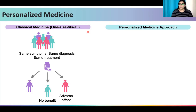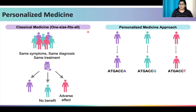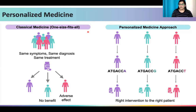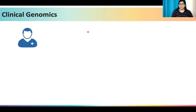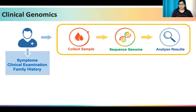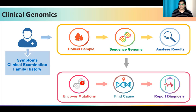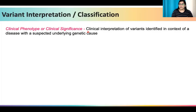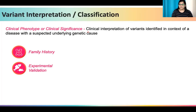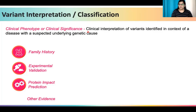In classical medicine, people having the same symptoms will receive the same diagnosis and treatment, which could either have no benefits at all or cause harmful effects. Through a personalized medicine approach, we can sequence and uncover the genetic makeup of the right type of patient. This also helps in clinical genomics — if a patient comes with some symptoms or a family history of a genetic disorder, we can sequence his genome to uncover and analyze his variants that can help explain his disease or condition. Variant interpretation involves assigning a clinical phenotype or clinical significance to variants identified in context of a disease having a suspected underlying genetic cause.